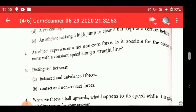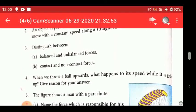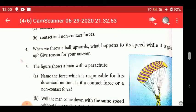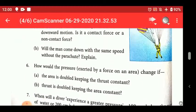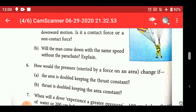Then distinguish between balanced and unbalanced, contact and non-contact - you have to write definitions with examples, I will give you the PDF also. When we throw a ball upwards, what happens to its speed while it is going up? Give reasons for its answer. When we throw a ball upward, its speed will decrease. Why? Because gravitational force is pulling it in the downward direction. Then the figure shows a man with a parachute. Name the force which is responsible for this. So it is gravitational force, coming downward, downward motion, and it is non-contact force. Will the man come down with the same speed without the parachute? No, because as he comes down, gravitational pull will also keep increasing, that's why his speed will increase.